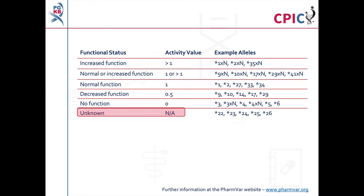Be aware that some CYP2D6 alleles have an unknown functional status and should be interpreted with caution on a genetic test. In addition, an important caveat for all genotyping tests is that any alleles which are not detected in the assay are designated as star 1. This can include rare increased function, reduced function, and non-functional alleles which are not routinely screened for in some genotyping tests. It is also important to note that patients can carry multiple copies of CYP2D6. Reports in the scientific literature have described cases where up to 13 copies of CYP2D6 were present in a patient's genome.